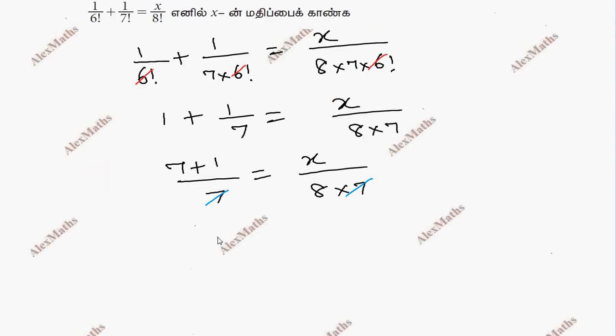Now, in this case, 8 is equal to x by 8. Cross-multiplying gives x equal to 64.